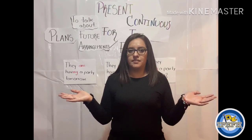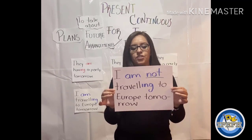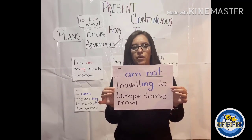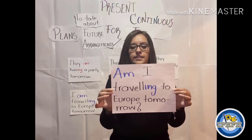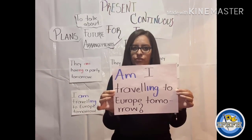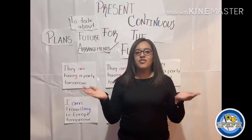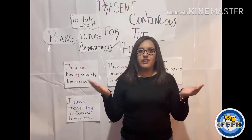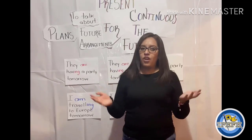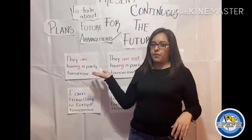Affirmative: I am traveling to Europe tomorrow. Negative: I am not traveling to Europe tomorrow. Interrogative: are you traveling to Europe tomorrow? Congratulations! You learned how to use present continuous for the future. You already know the uses and the three forms with examples.